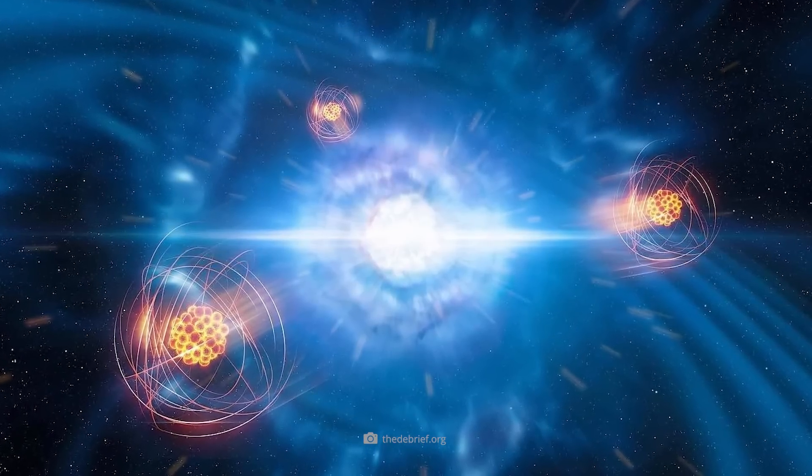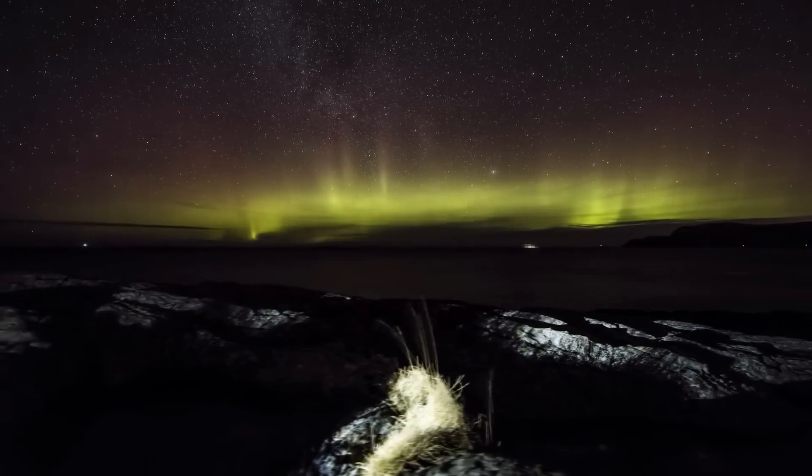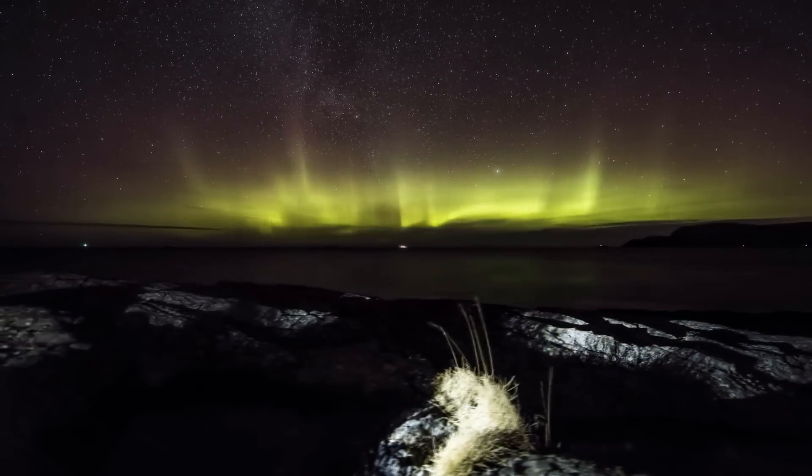Because if the ominous field really exists, then it also has the property of condensing at certain points. And just as a photon embodies a wave and a particle at the same time, the Higgs field can also manifest itself at these points in the form of a particle.